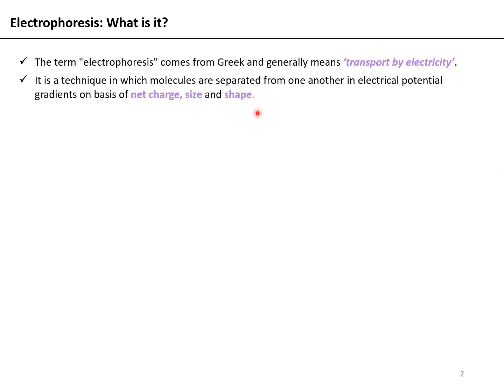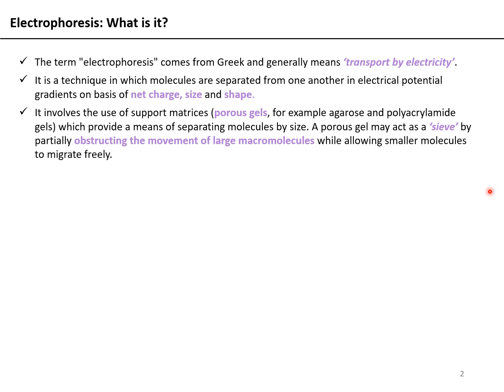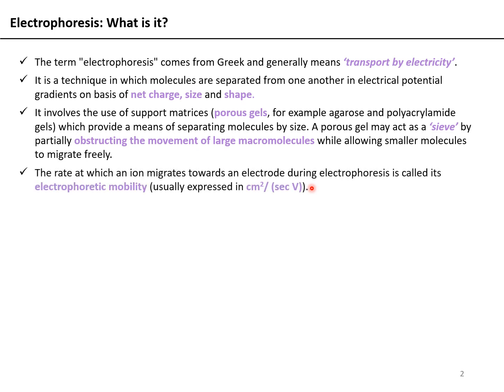Electrophoresis is a technique in which molecules are separated from one another in an electrical potential gradient on the basis of net charge, size, and shape. It involves the use of support matrices — essentially porous gels such as agarose or polyacrylamide — which act as a sieve by partially obstructing the movement of large macromolecules while allowing smaller molecules to migrate freely. The cathode is negatively charged, so positively charged molecules migrate towards it; the anode is positively charged, and negatively charged molecules migrate towards the anode.